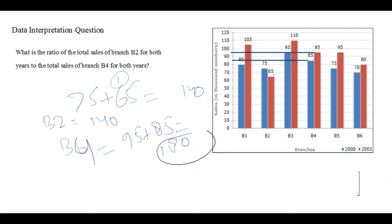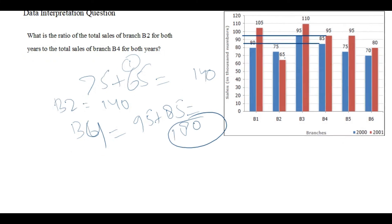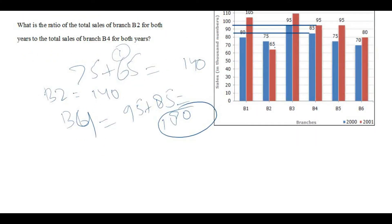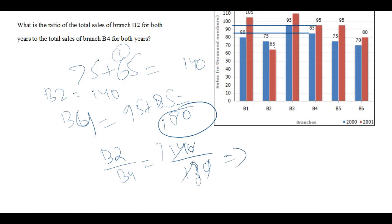Now we have the sales for both consecutive years 2000 and 2001. We can calculate the ratio of branch 2 to branch 4: branch 2 is 140 and branch 4 is 180, so that simplifies to 7:9. So the answer is 7:9.